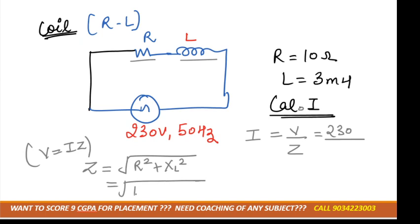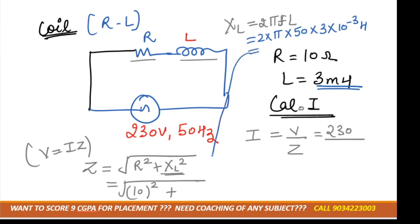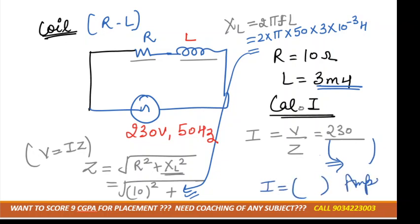First, we need to calculate XL. The formula is XL = 2πfL. We know π, frequency f, and L — but we must convert L to standard units: L = 3 × 10⁻³ henry. From this we get the value of XL, then substitute into Z = √(R² + XL²) to get Z, and finally substitute into I = V/Z to get the current in amperes.